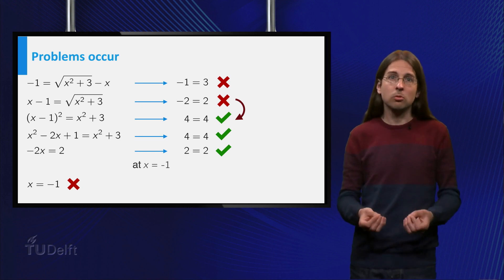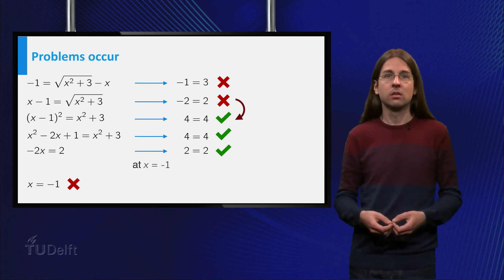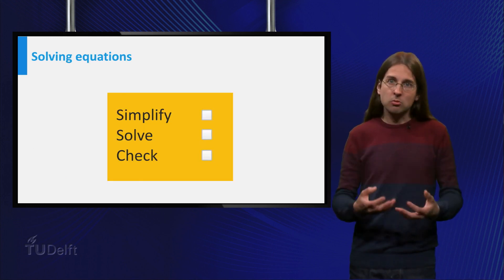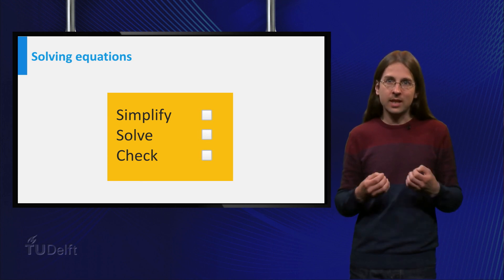If the squares are equal, then the original numbers need not be. And this is exactly what happens in our equation. By squaring an equation, you can introduce extra solutions.